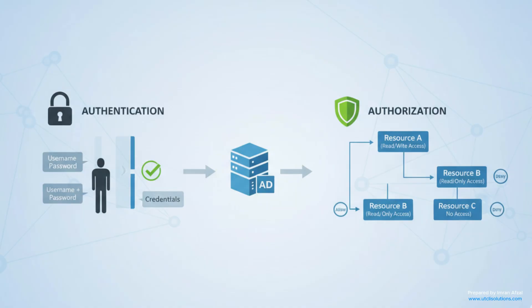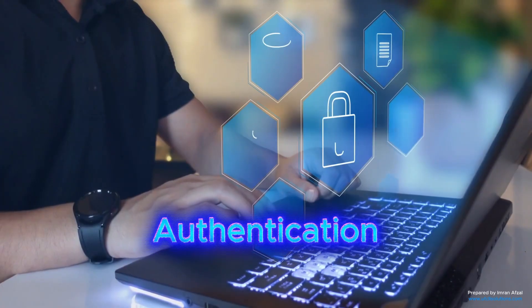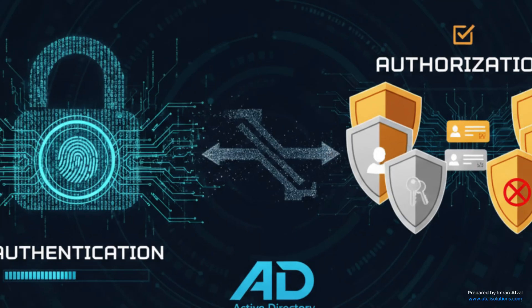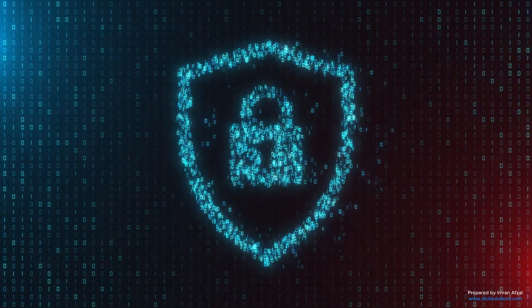Another important part of AD is authentication and authorization. Authentication means checking if a person is really who they say they are, like typing the correct password. Authorization means checking what that person is allowed to do, like opening a file or changing a setting. Active Directory handles both of these jobs to make sure the network is safe.